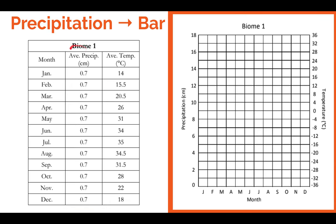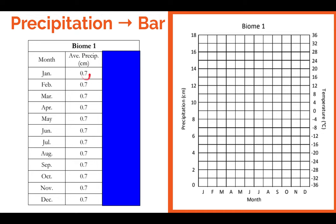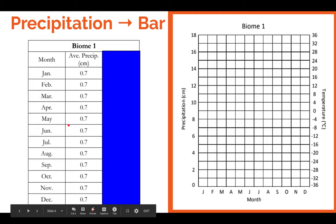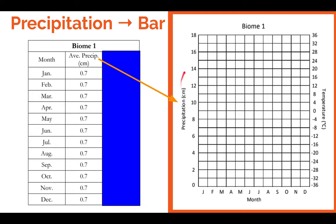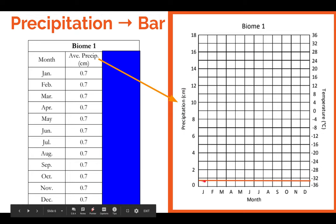So taking biome one, for example, remember precipitation is a bar graph. We're not going to worry about temperature here then. So we have precipitation. This one's pretty easy. It's 0.7 throughout the year. And here again, this is precipitation. We're going to be looking at centimeters. So we're going to just draw a bar graph from 0.7 all the way across. And there's our precipitation for the year.